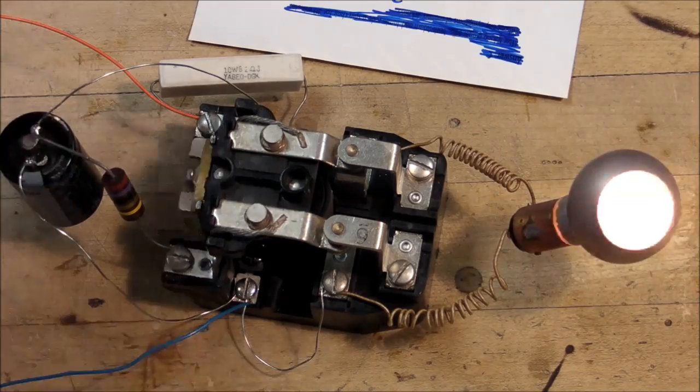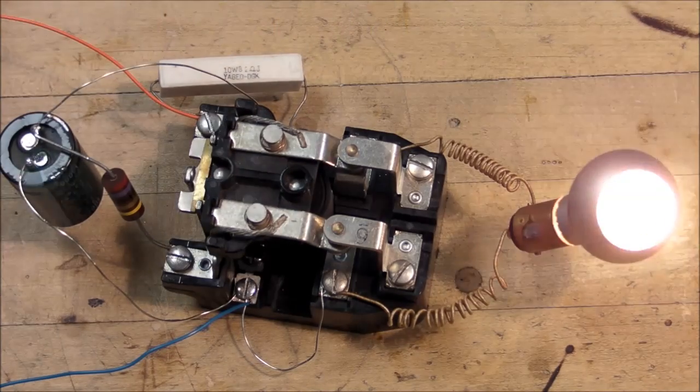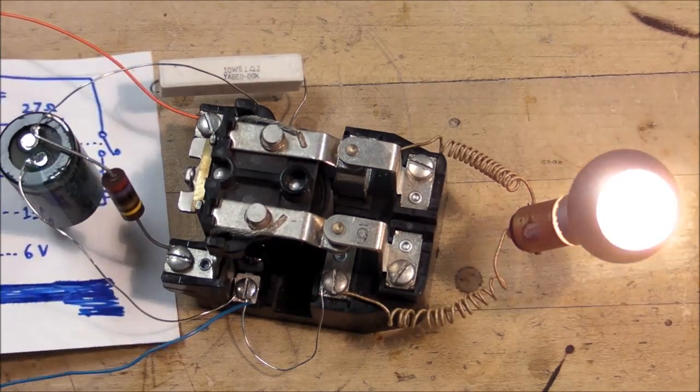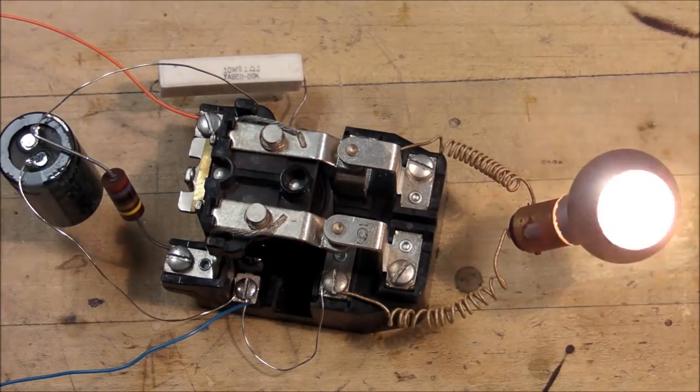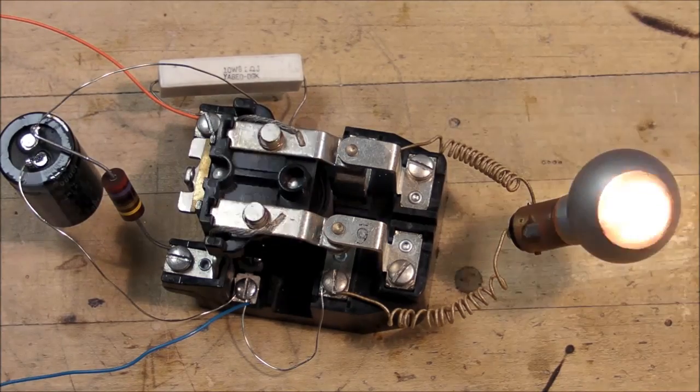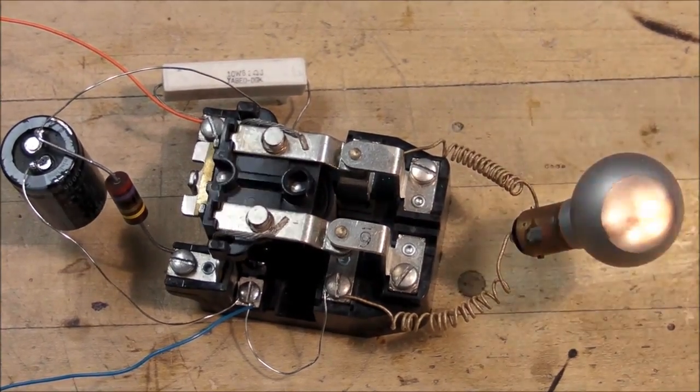So that's a nice way to make an oscillating circuit using nothing more than a relay and a couple of passive components. And you're all set. You got a nice little light bulb flasher.